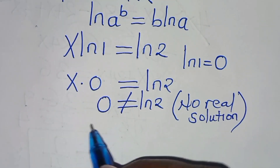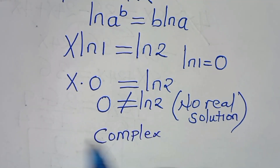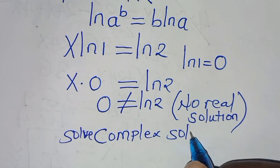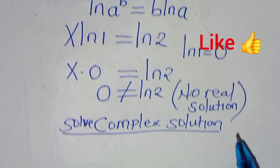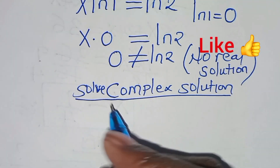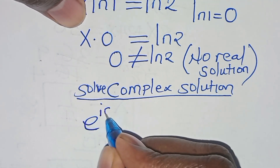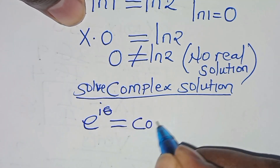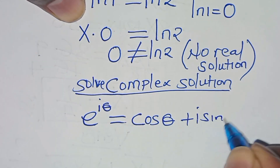But you can solve for the complex solution, by introducing the Euler identity: e to the power of i·θ is equal to cos(θ) plus i·sin(θ).